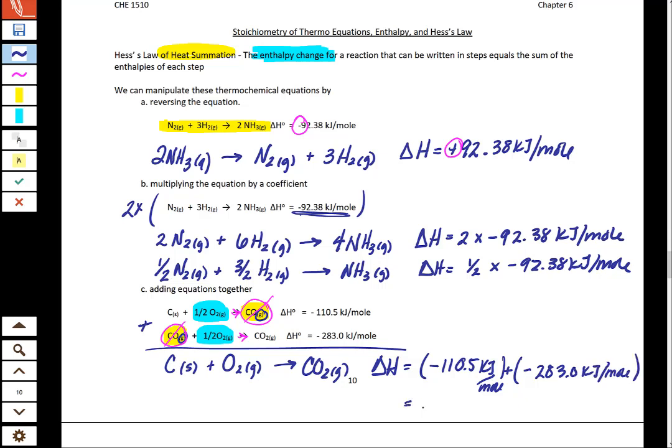So overall, our delta H is a negative 393.5 kilojoules per mole. So these are the three actions that you're capable of doing. Let's look at a problem that's going to help us figure out when we're going to employ these actions.